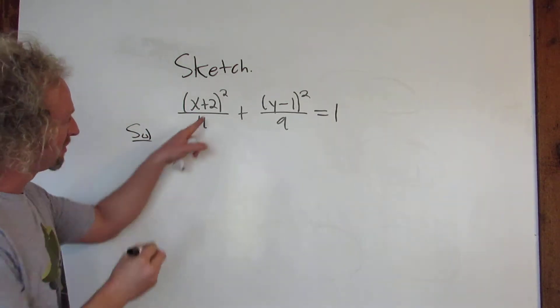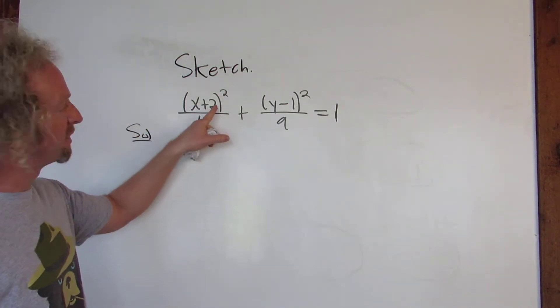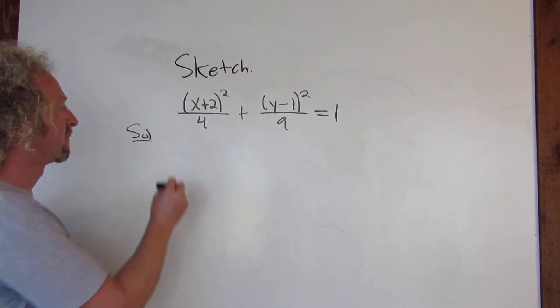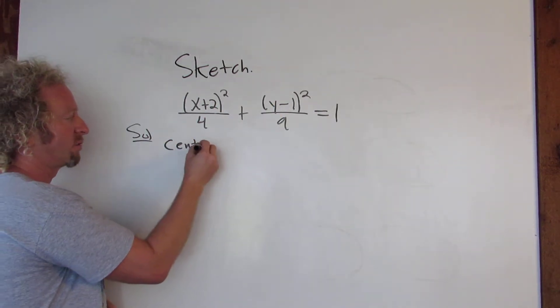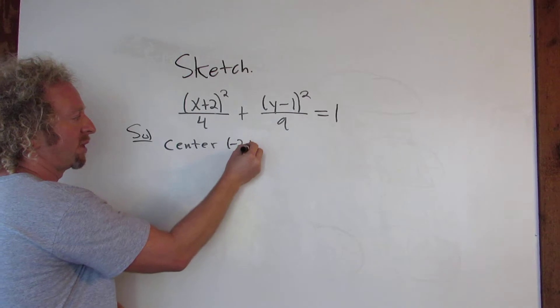So for the solution, the center here - you just switch the signs. So it'll be negative 2, 1. Center, negative 2, 1.